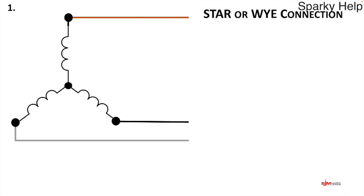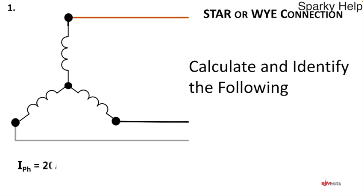In this case we have three coils. What do we need to calculate and identify? We're going to look at i-phase which is 20 amps, and we want to work out il and v-phase. We've already been given vl. So this is our first question — if you wish to have a go, pause the video, get your calculator and pen, and see where you get to.